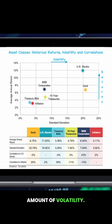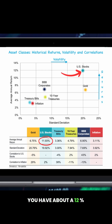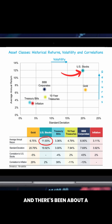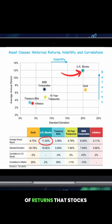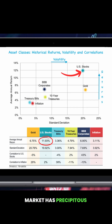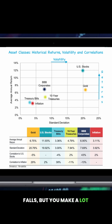U.S. stocks have had about a 12% average rate of return over that time, with about a 20% standard deviation — meaning there has been real volatility. The phrase we use is: volatility is the price of admission for the kind of returns that stocks can give you. You're going to have times where the stock market has precipitous falls, but you make a lot of money in the long run.